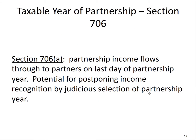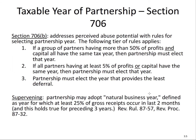The next topic is taxable year. Section 706 deals with the rule for taxable year, and it uses a three-tier waterfall. This is a waterfall rule, which means you go down sequentially: if you meet the first test, you stop. If you don't meet the first, you go to the second and stop there if you meet it. If you don't meet the first or second, the third will always work.